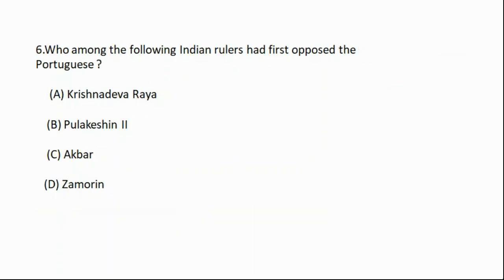Question number six: Who among the following Indian rulers first opposed the Portuguese? Option A: Krishnadevaraya, option B: Prataparudra II, option C: Akbar, option D: Zamorin. The correct answer is option D, Zamorin.